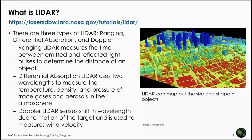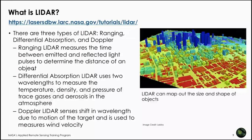Ranging LiDAR, which is of interest for urban flooding, measures the time between emitted and reflected light pulses to determine the distance of a target. Differential absorption LiDAR uses two different wavelengths to measure temperature, density, pressure, trace gases, and aerosols in the atmosphere. Doppler LiDAR senses wavelength shifts due to motion, used for measuring wind velocity. The one we will discuss is ranging LiDAR, which generates three-dimensional information about the shape of the Earth's surface at high resolution, resolving buildings and streets.